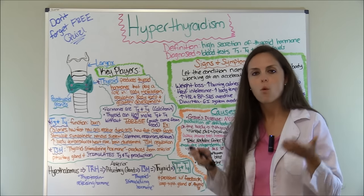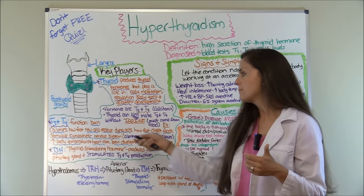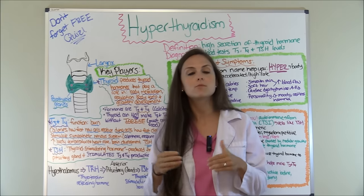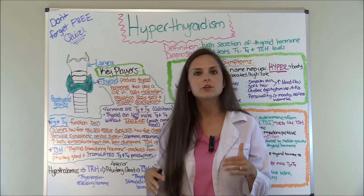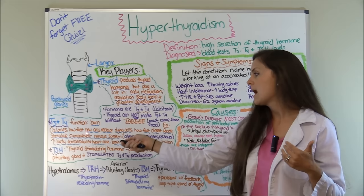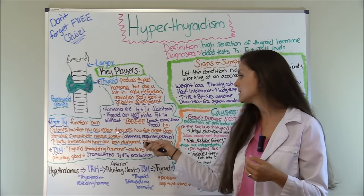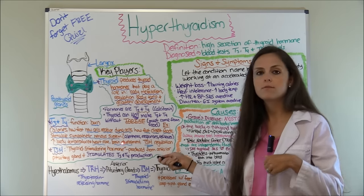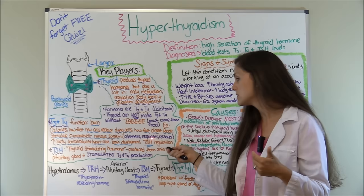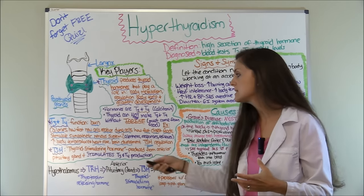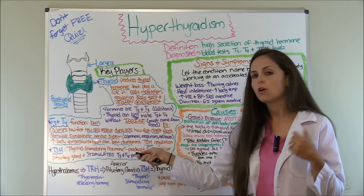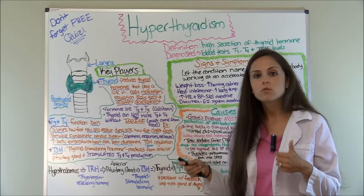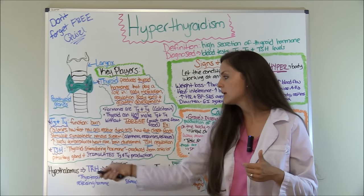So what exactly do T3 and T4 do? Their function is that they help you burn calories. In hyperthyroidism, we're going to be burning calories at an excessive rate, so you're going to see weight loss. T3 and T4 also determine how fast new cells replace dying cells, how fast we digest food, and they stimulate the sympathetic nervous system — that's why we have alertness, responsiveness, and quick reflexes. They also increase body temperature, heart rate, and blood pressure, and play a big role in brain development and regulating TSH.